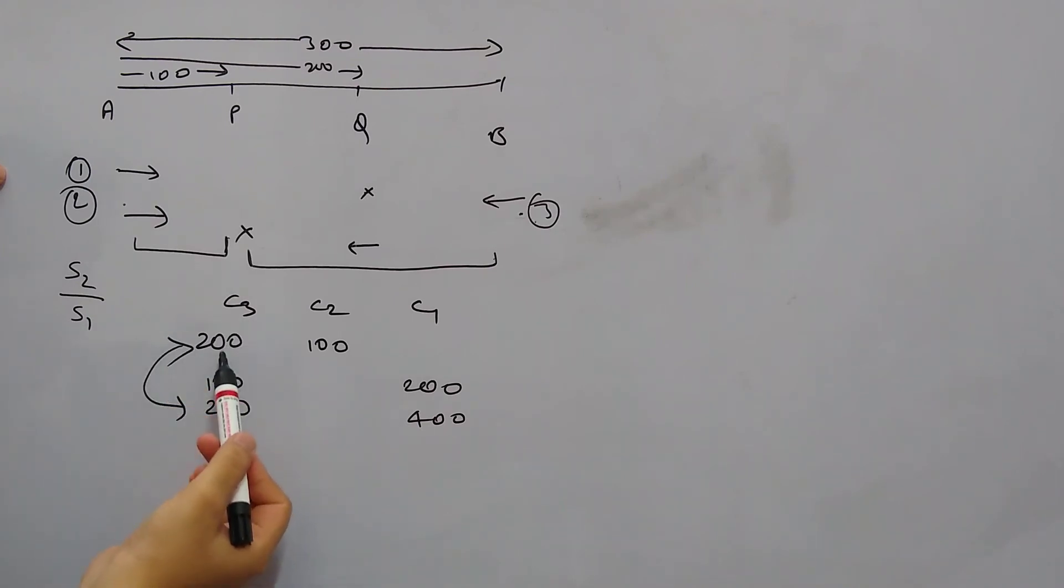Now if we compare this, by the time car 3 is making 200 kilometers, car 2 is covering 100 kilometers and car 1 is covering 400 kilometers. So the ratio of their speeds, s2 by s1, will be: speed is directly proportional to the distance they have covered. So s2 is covering 100 and s1 is covering 400, so the required ratio is 1 by 4, which is the answer.